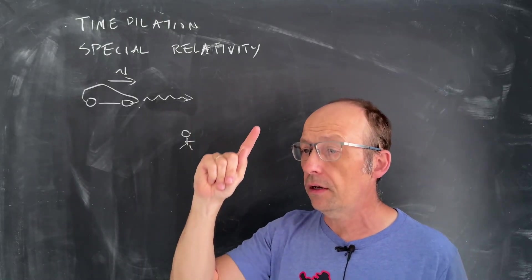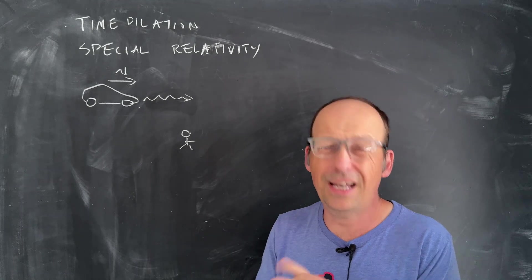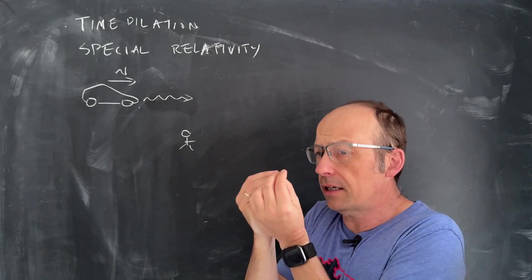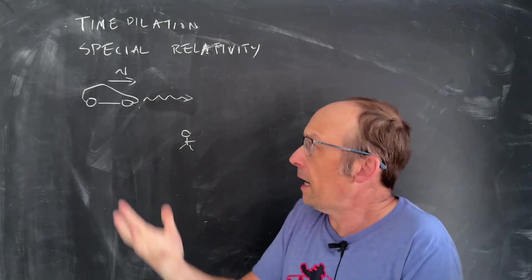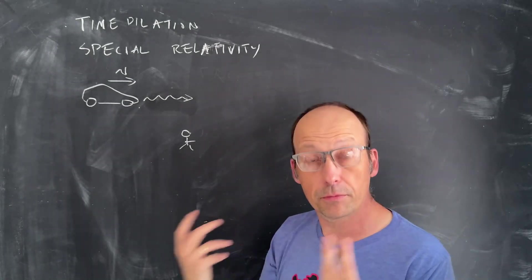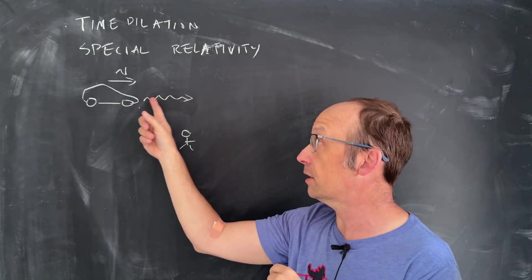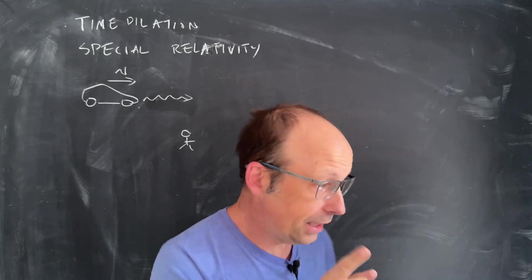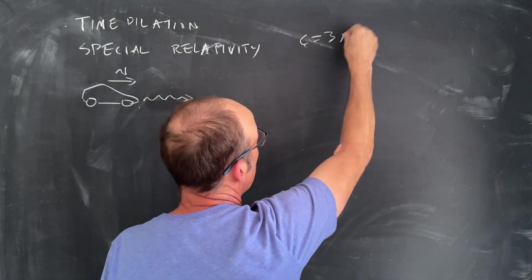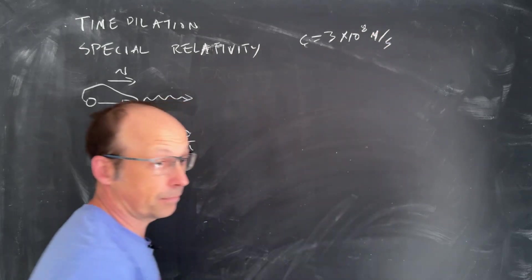I'm going to derive time dilation for an object moving fast. This all comes from Einstein's theory of special relativity. Imagine you had a car driving with some velocity v, and it turns on its headlights. The person inside the car sees the light traveling out of the car at c, where c is the speed of light. Remember, c is 3 times 10 to the eighth meters per second.